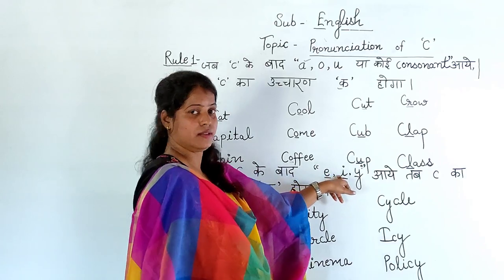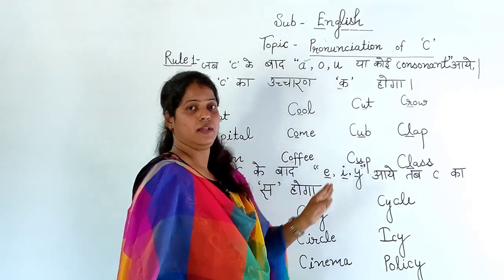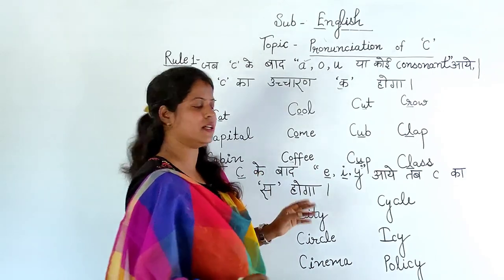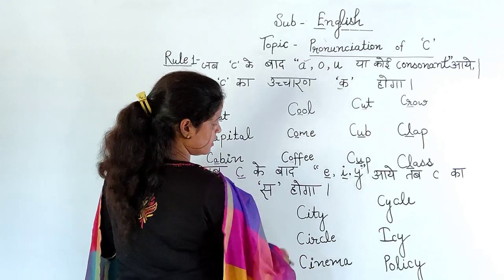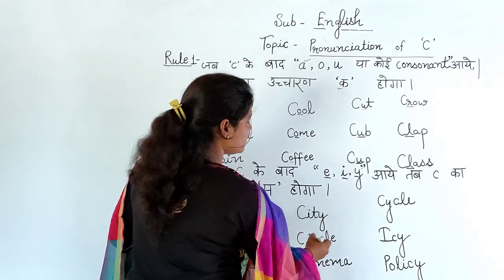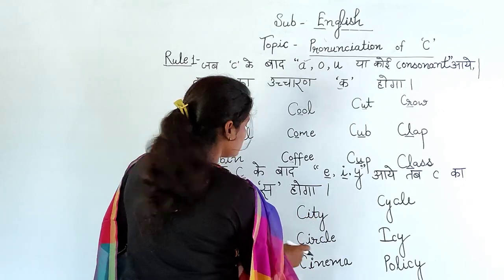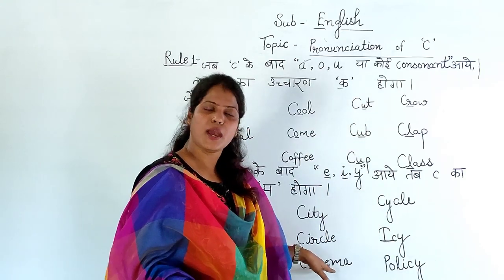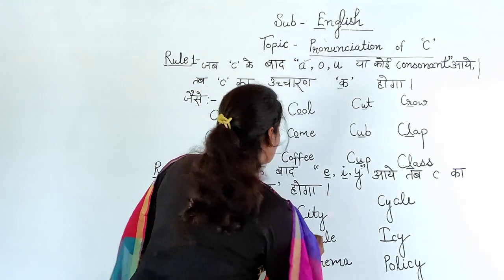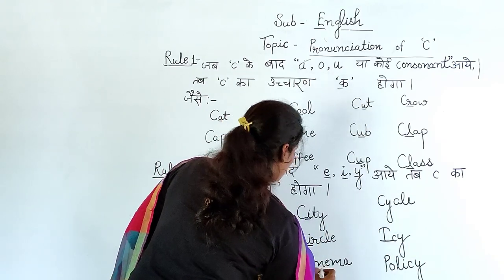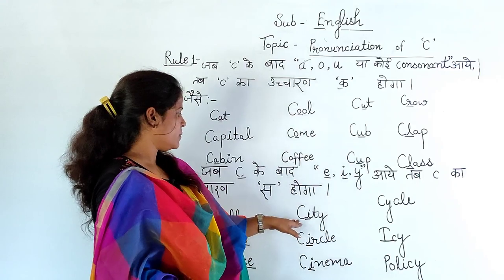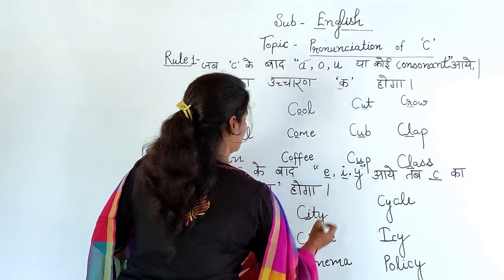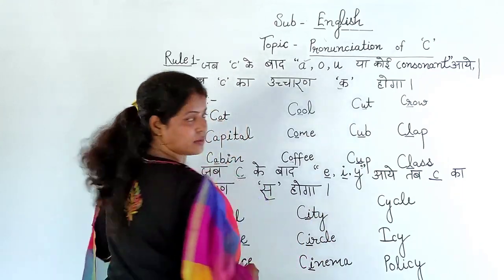Next, when I comes after C, then also C is pronounced as 'S'. Let us see: city — C-I-T-Y, city; circle — C-I-R-C-L-E, circle; cinema — C-I-N-E-M-A, cinema. Okay? In these also after C comes I, so the pronunciation of C will be 'S'. Okay?